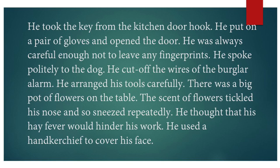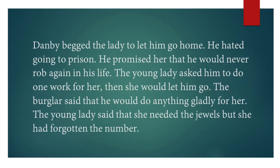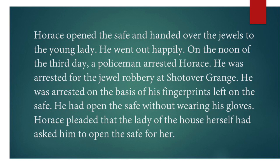Then he heard the voice of a young lady behind him. She was young, pretty and dressed in red. She advised him to cure his hay fever with a special treatment and spoke kindly to him. She pretended to be the wife of the owner of the house, saying she had come suddenly because she needed her jewels for a party that night. Danby begged her to let him go home as he hated going to prison, and promised he would never rob her again. The young lady said she needed the jewels but had forgotten the number, and if he opened the safe she would let him go. Horace opened the safe and handed over the jewels to her, then went out happily.